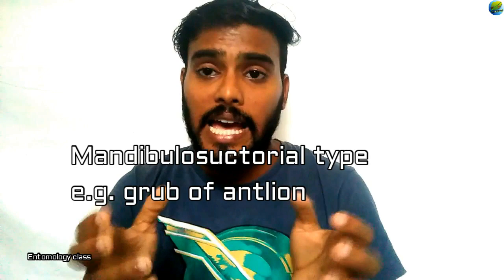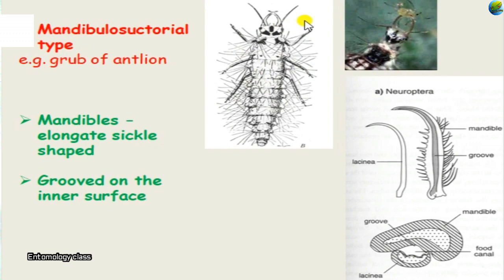The next kind of mouthpart is the mandibulo-suctorial type, present in the antlion grub. In their immature stage, antlion grubs feed on insects using their mandibles by crushing them. Inside the mandible there is a groove consisting of the maxillae, which form a closed food channel. The antlion, being carnivorous, crushes its prey — for example aphids — using the mandibles, and the juice extracted is sucked by the maxillae through the food channel.